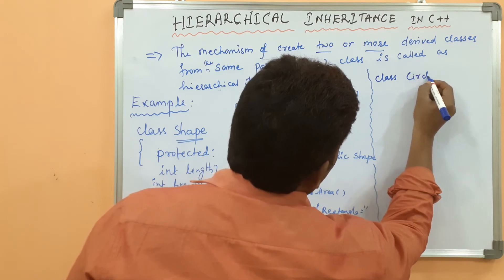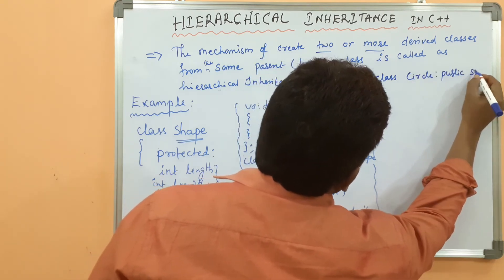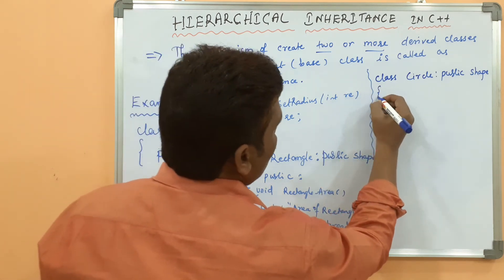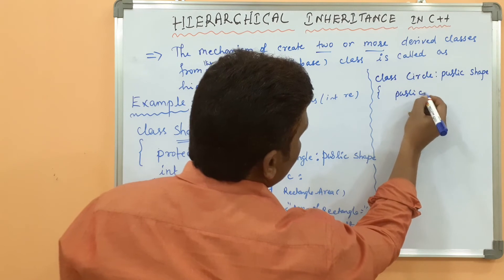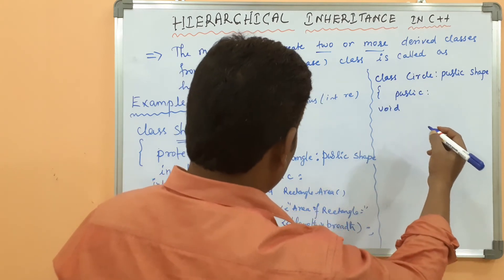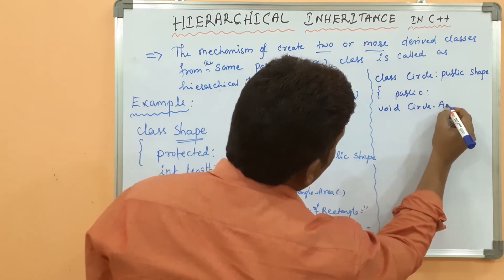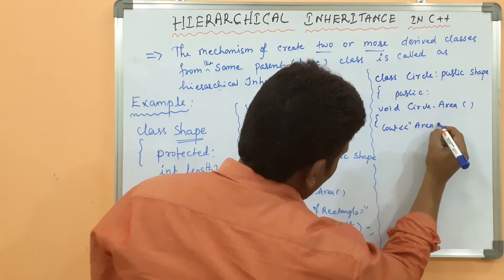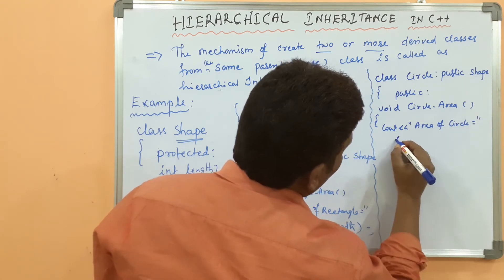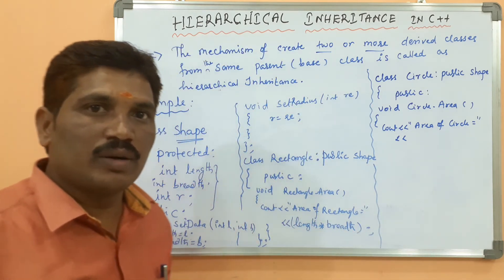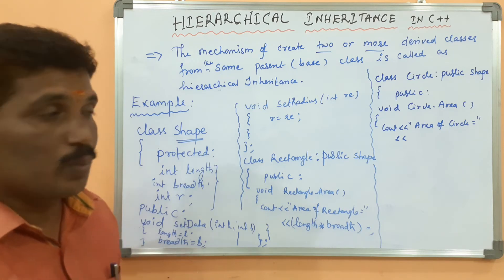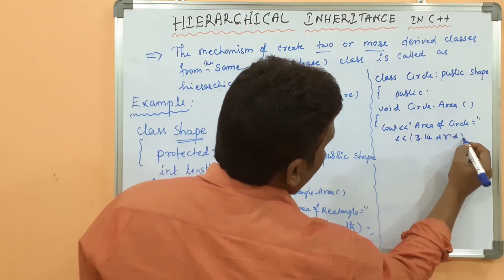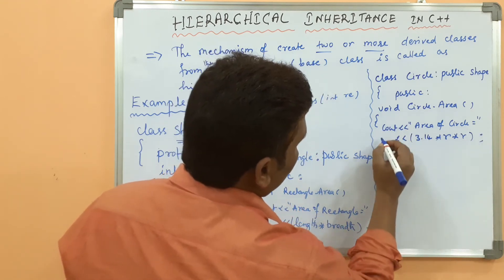The second derived class is circle: 'class circle : public shape'. Under public, I define 'void circleArea()' which outputs: area of circle = 3.14 * r * r. Then the function and class are closed.